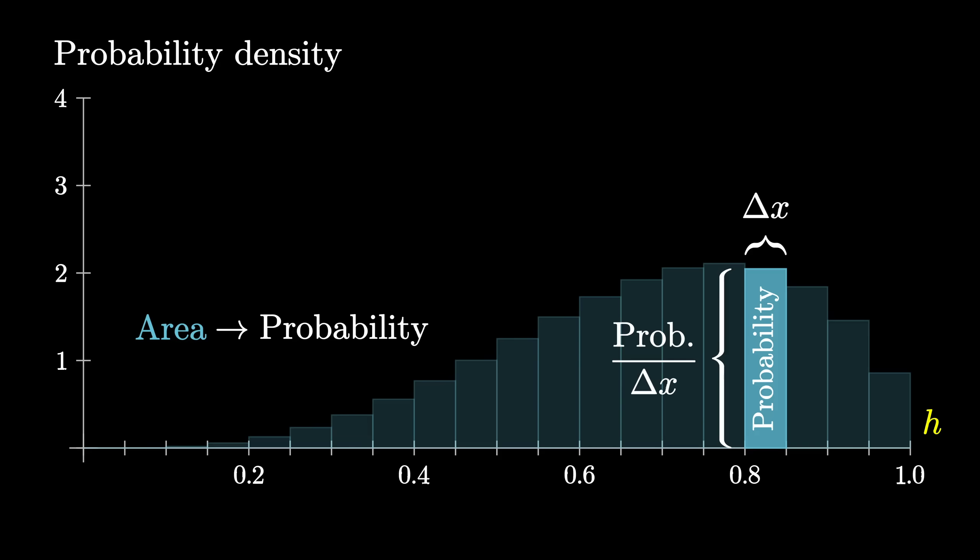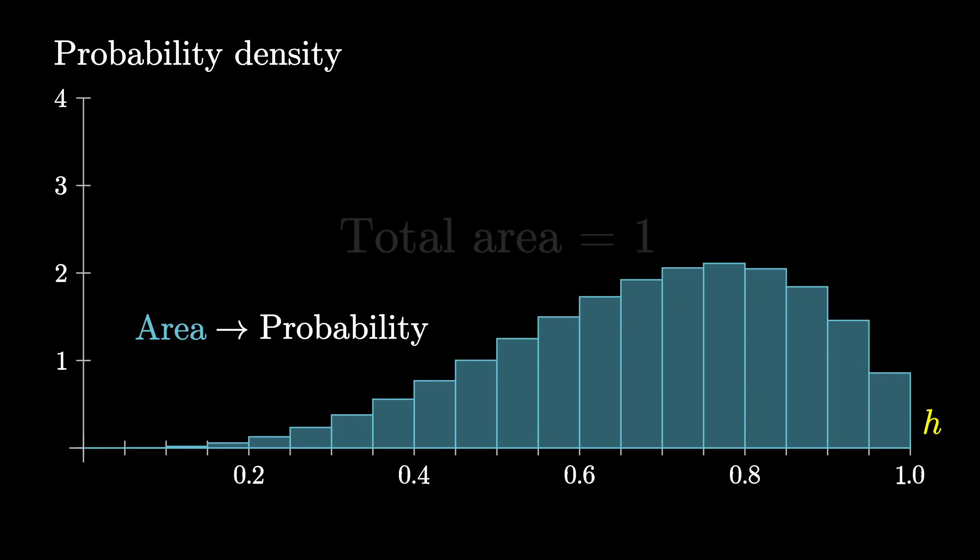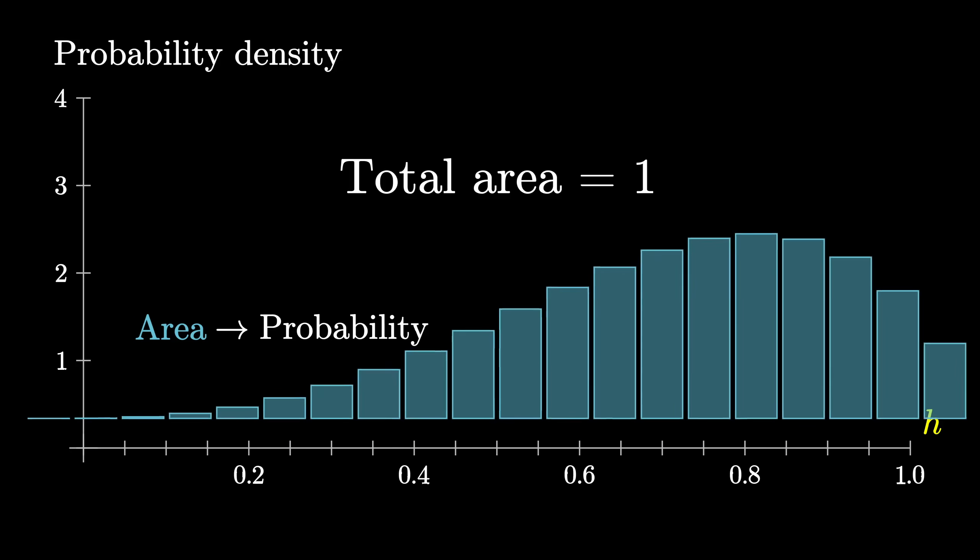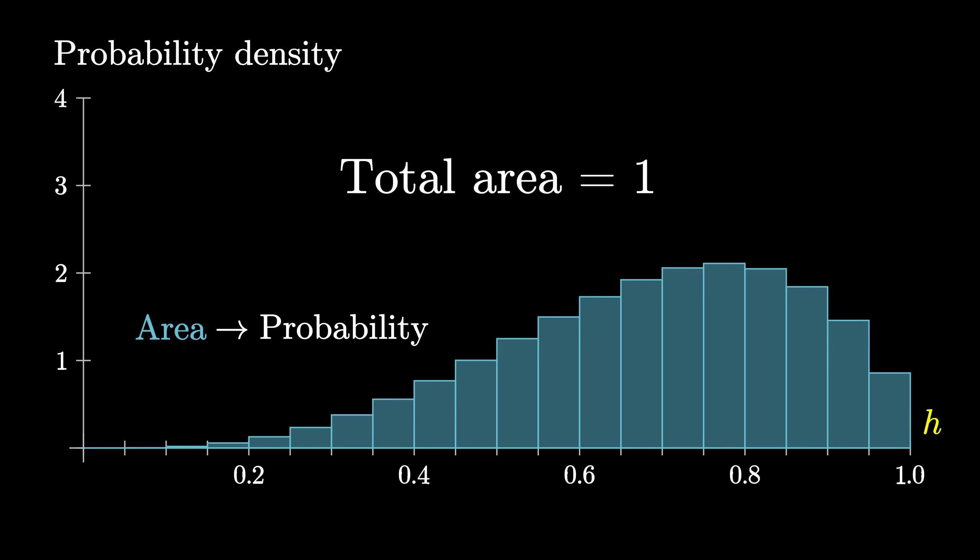The other thing to keep in mind is that the total area of all these bars has to equal 1 at every level of the process. That's something that has to be true for any valid probability distribution.